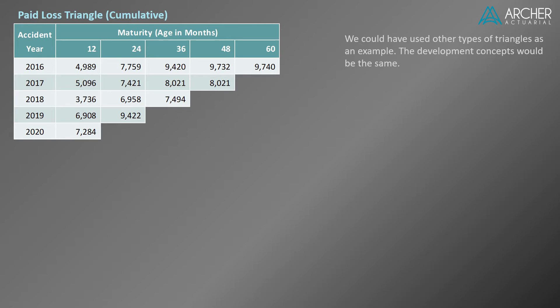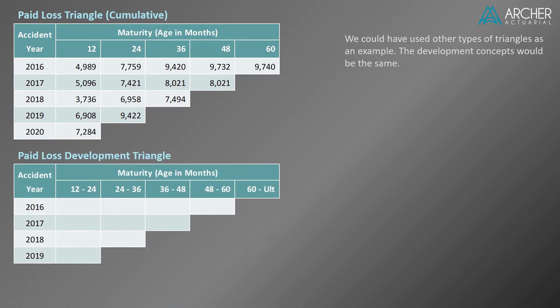Note that we could use a different type of loss triangle as an example — the development concepts are analogous in either case. We're going to populate the paid loss development triangle that corresponds to the paid loss triangle above it. The development triangle is also on an accident year basis, starting with accident year 2016. The reason that accident year 2020 is absent will become obvious shortly. Notice that the maturities look a bit different too — the first maturity is read 12 to 24, and this represents the change in paid loss between age 12 months and age 24 months.